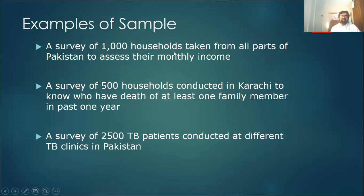A survey of 1,000 households taken from all parts of Pakistan to assess their monthly income - in the previous slide, monthly income of all households in Pakistan, and here of 1,000, so 1,000 is a sample. A survey of 500 households conducted in Karachi to know who have death of at least one family member - there was no number mentioned in the population but here it is 500, a sample of 500. 2,500 TB patients - in the previous slide there was no number of patients, but here 2,500 patients which is a small fraction of all the patients with TB, so that is a sample.